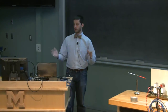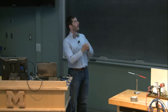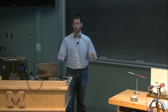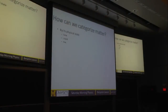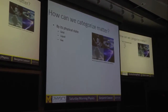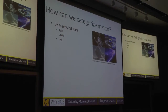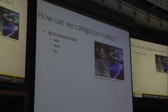Before I say what new types of matter we're looking for, I'm going to talk about how do we categorize matter. What does it mean to have a new type of matter? A familiar way to categorize matter is by its physical state. You're all familiar with solids, liquids, and gases. I have a picture here of liquid water, ice — solid water — air, various types of physical states of matter.